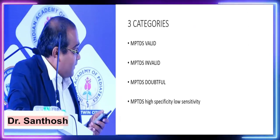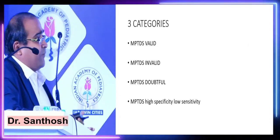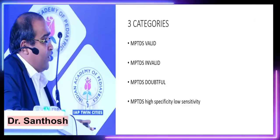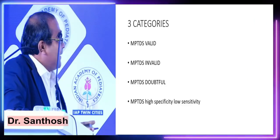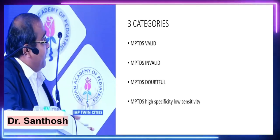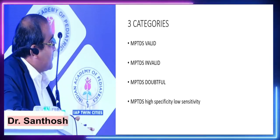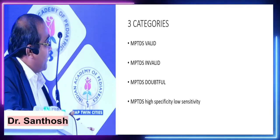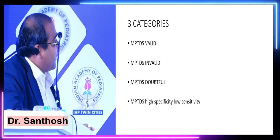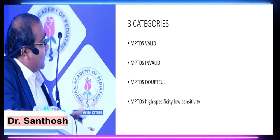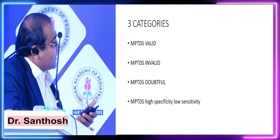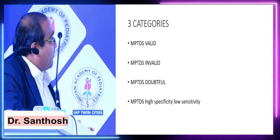Take the recent example of Tata Motors — we know Tata is the best promoter to bet on, but Tata Motors is currently a loss-making company. However, EV is the future, and the price of Tata Motors in the last one year has almost doubled because it might go up in the future. As it falls more into MPTDS Valid criteria, it might come into our portfolio.